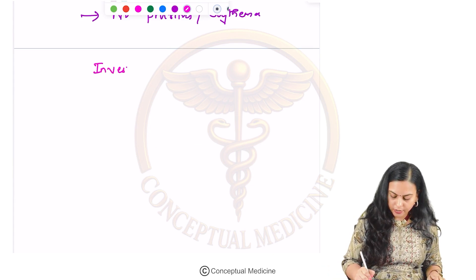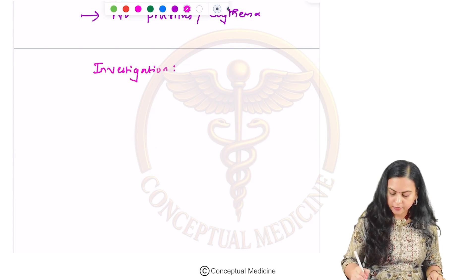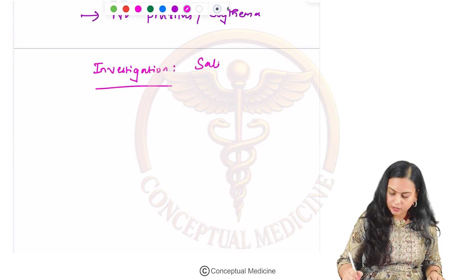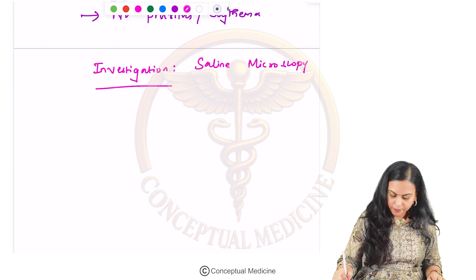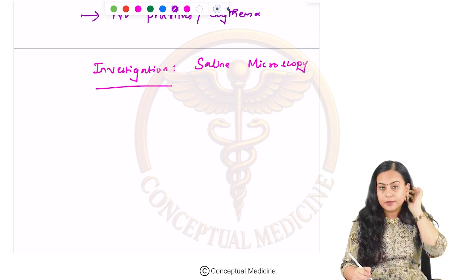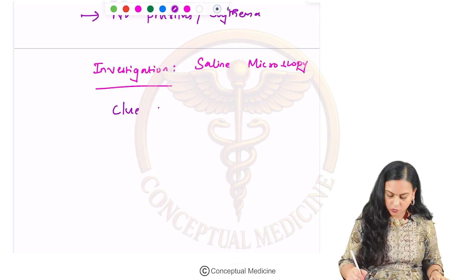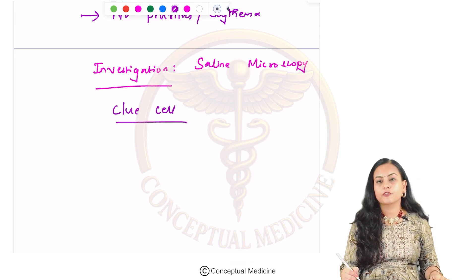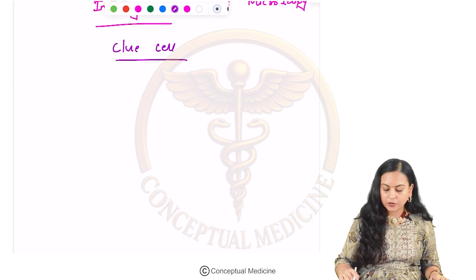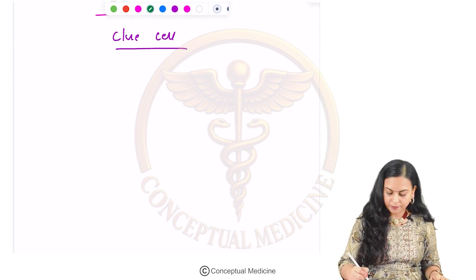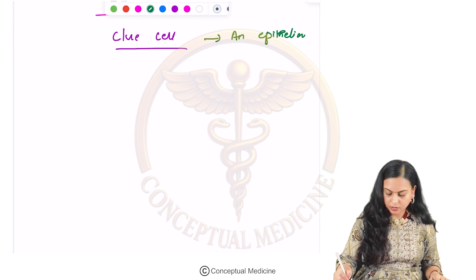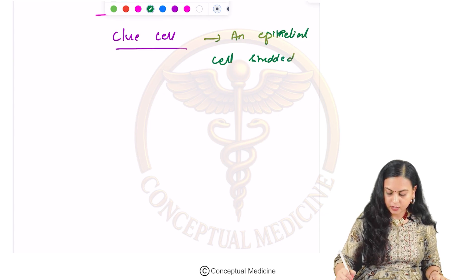The investigation you can do for this condition is saline microscopy. On saline microscopy you will be able to see a cell called the clue cell. This is specific for Gardnerella vaginalis. A clue cell is nothing but an epithelial cell that is studded with bacteria.